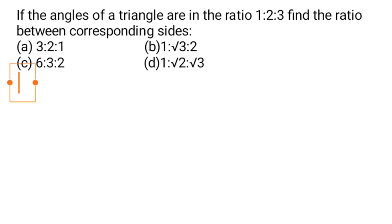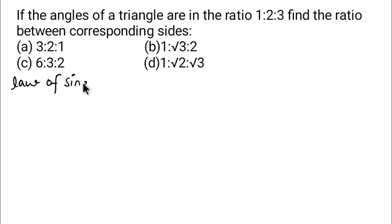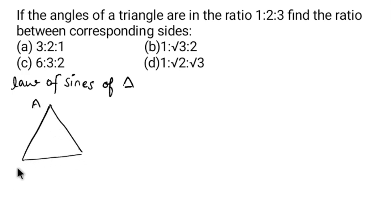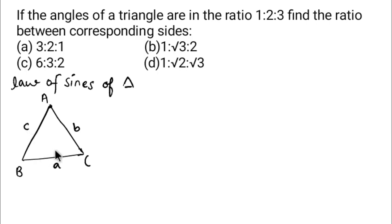For this type of question, we know the Law of Sines for a triangle. I'll select the pen and draw a triangle. The Law of Sines says something important. First, I draw a triangle where the vertices are A, B, and C. The side opposite to angle A is side a.